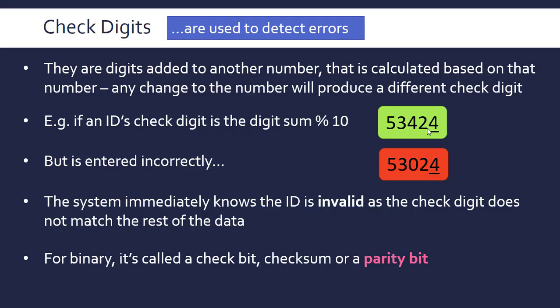Just to summarize, we're calculating a value based off the rest of the data. Once this arrives at its destination after being transmitted, we can recalculate the value and see if it matches. If it doesn't match, then we need to resend it because an error has been introduced in transmission.